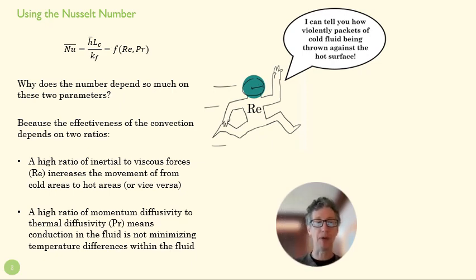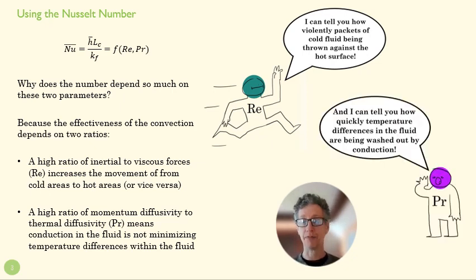The Prandtl number is the ratio of momentum diffusivity, that is how quickly inertia in the fluid spreads out to other parts of the fluid, over thermal diffusivity, which tells us how fast thermal energy moves by conduction through the fluid. And if we have a high ratio there, it means that the temperature differences in the fluid are not being minimized or washed out by thermal conductivity. If we have a lot of thermal diffusivity in our flow, we're not going to have big temperature differences. And so throwing fluid violently against the surface isn't going to be very effective because the temperature differences between the fluid next to the surface and the fluid away from the surface is not going to be very high. And so a little Prandtl man here tells us that the Prandtl tells us how quickly those temperature differences are going to be washed out.